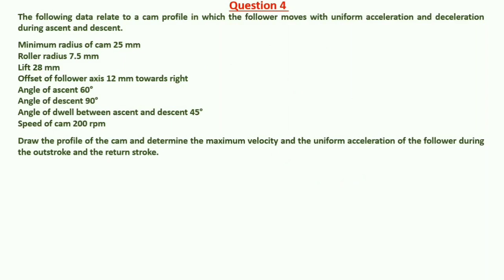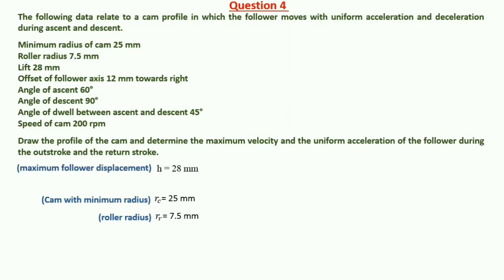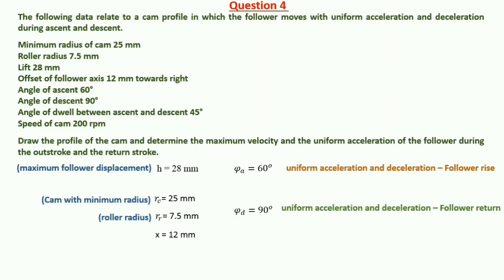Now here is the question. The minimum radius of the cam is 25 mm, having a roller radius of 7.5 mm. The lift H is equal to 28 mm. X is given as 12 mm. The angle of ascent phi A is equal to 60 degrees, and the angle of descent phi D is equal to 90 degrees. Both have uniform acceleration and deceleration follower motion.